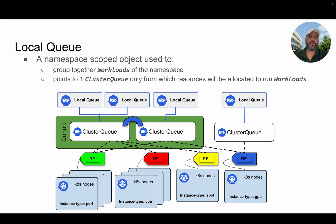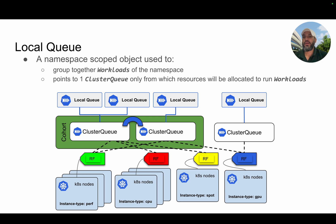The next concept is the local queue. The local queue is a namespace-scoped object and can be created by Kueue users or job submitters. A local queue is linked to exactly one cluster queue — you specify which cluster queue it will use, and that specified cluster queue determines which cluster queue your workloads may land in, in terms of resource usage.